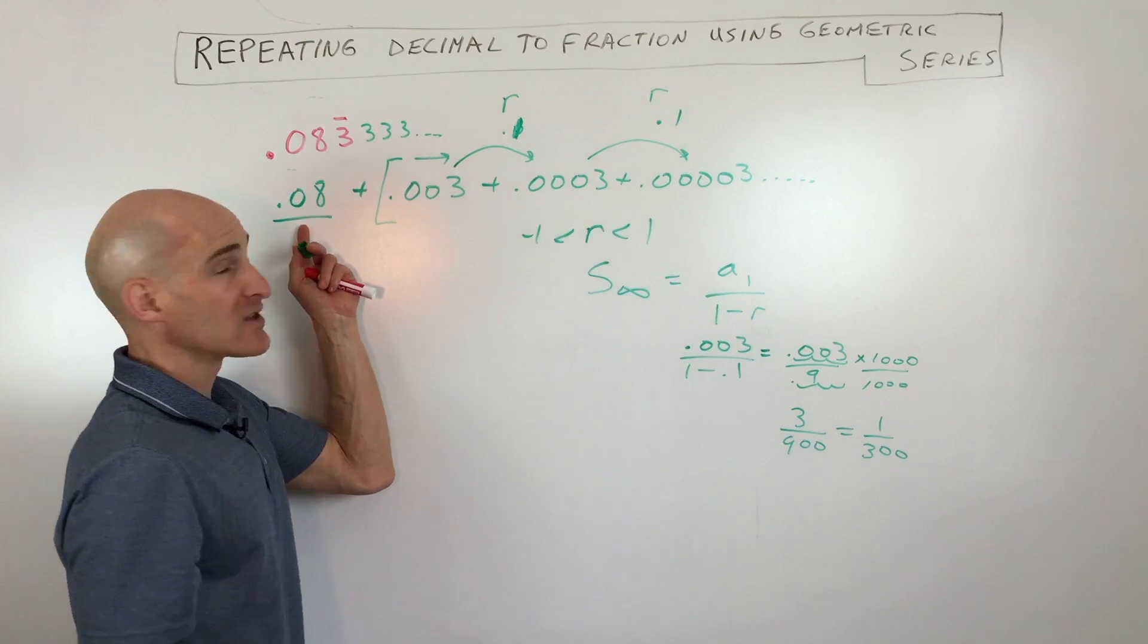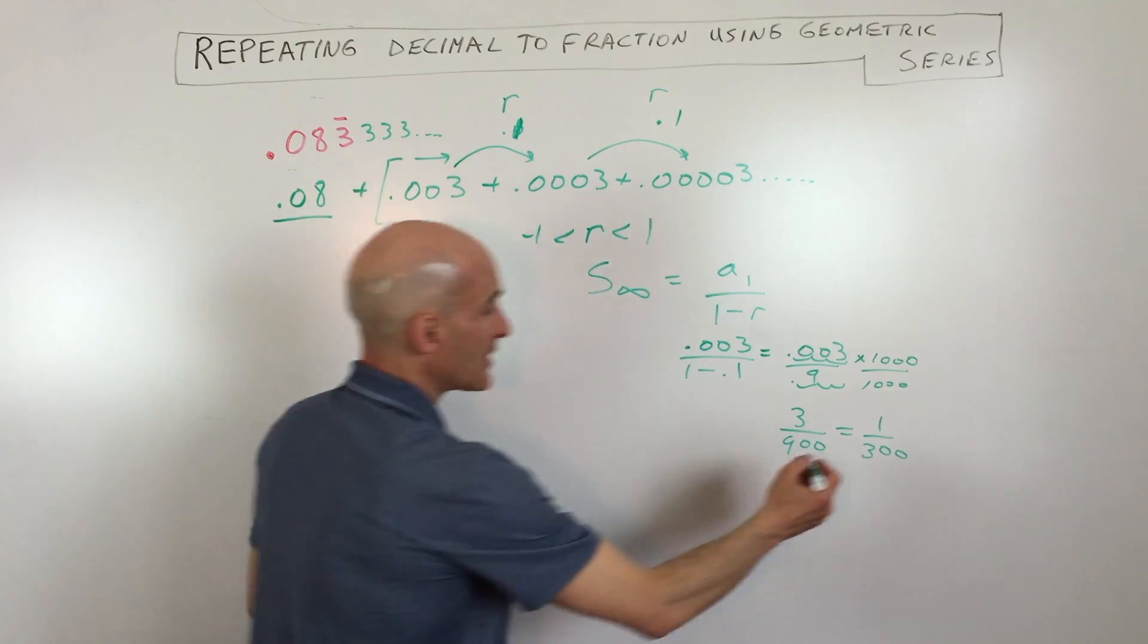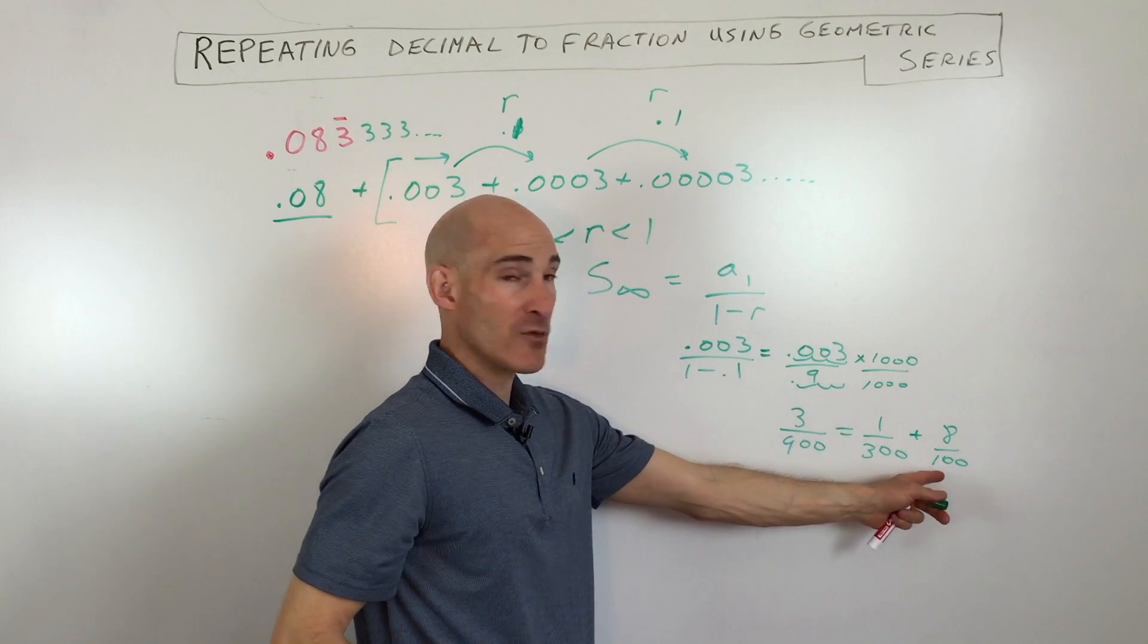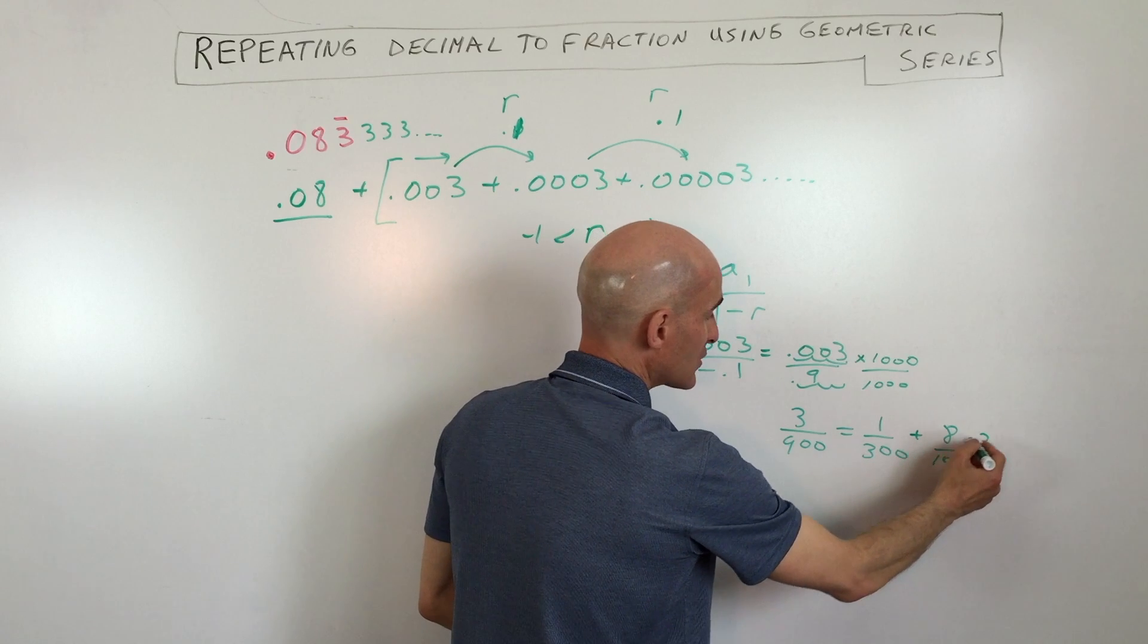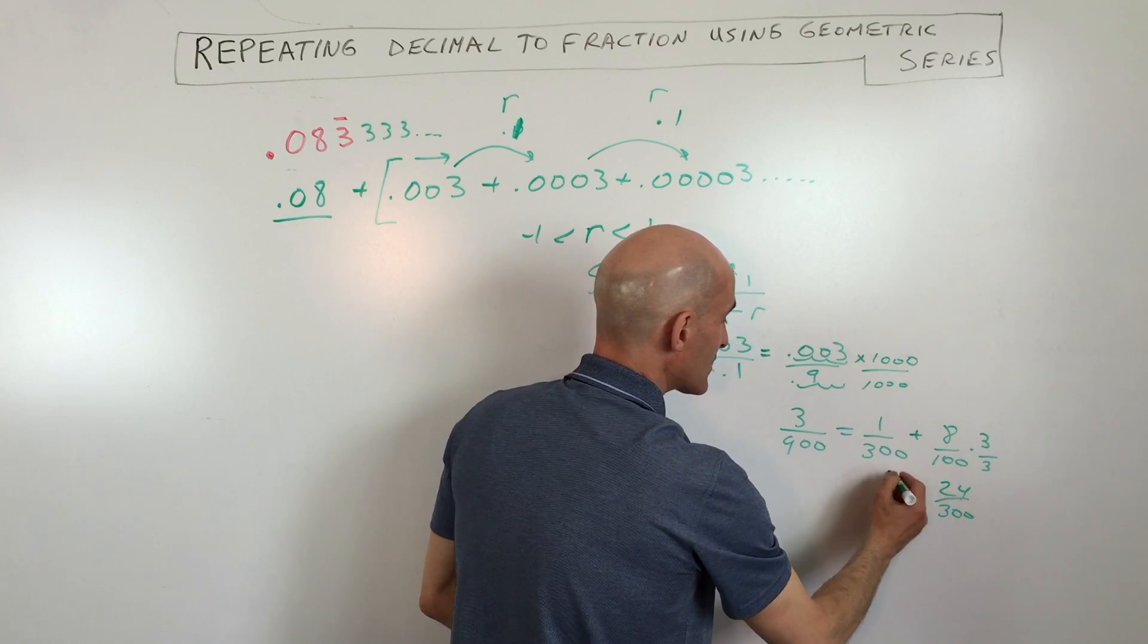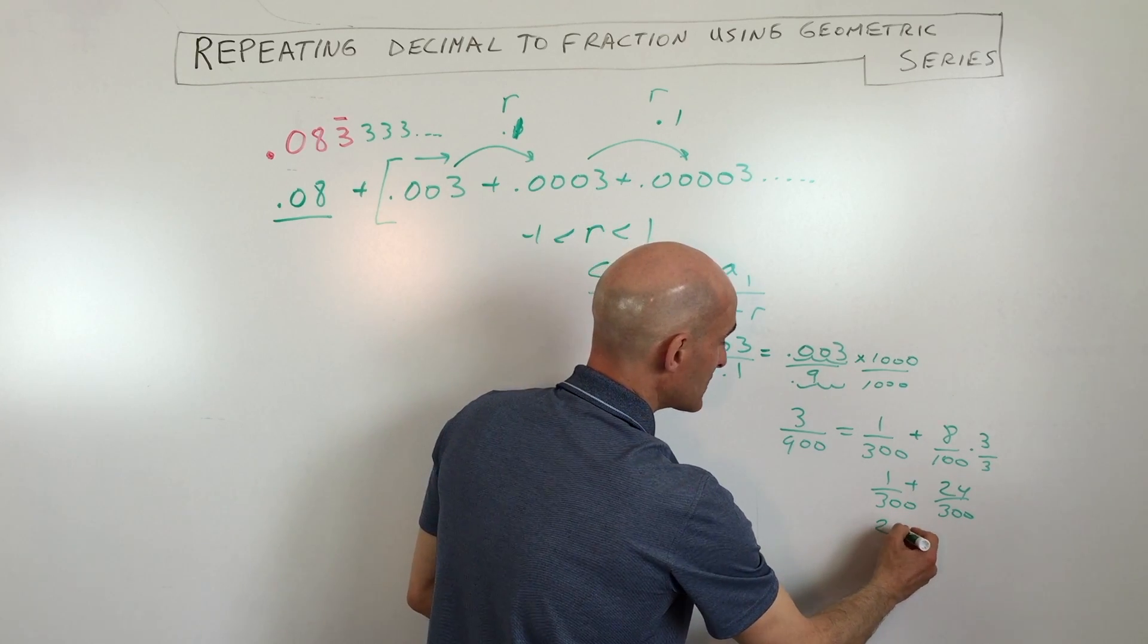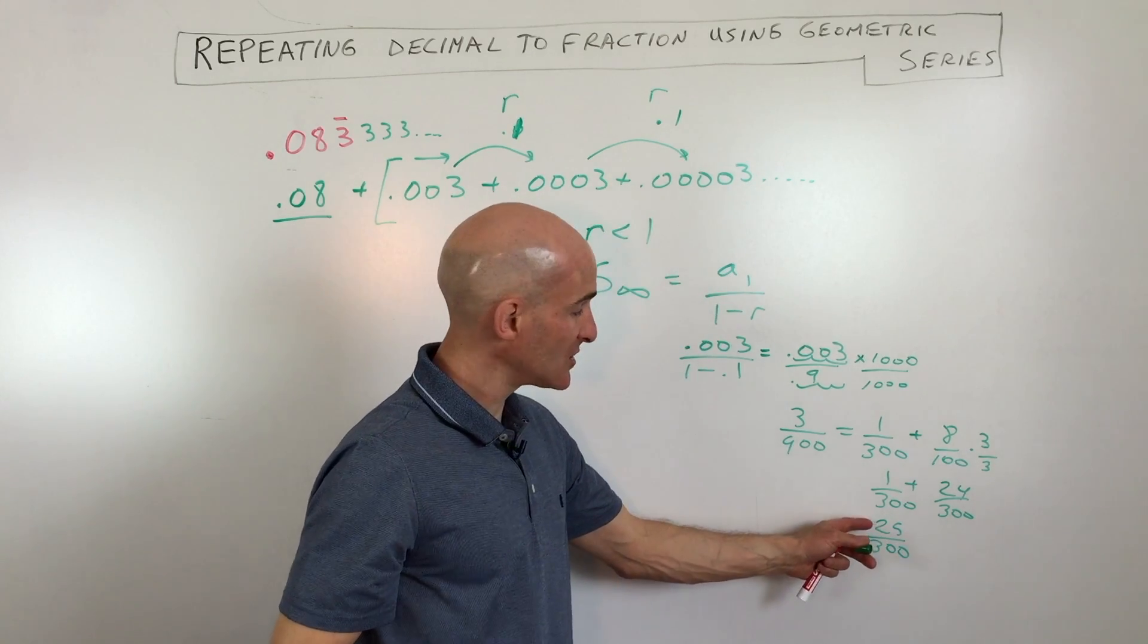But we have to add on the 0.08. Now 0.08 is really 8 hundredths. So we have to add this to 8 hundredths. And if we multiply the numerator and denominator by 3, because we're trying to get common denominators, you can see we get 24 over 300 plus 1 over 300. This is coming out to 25 over 300.